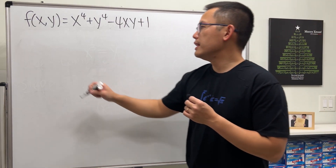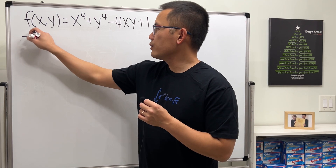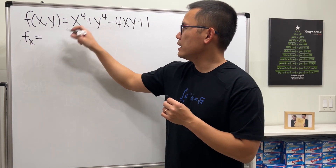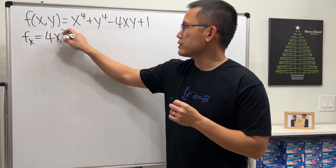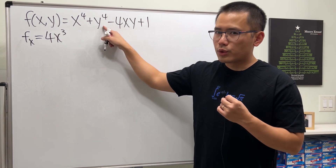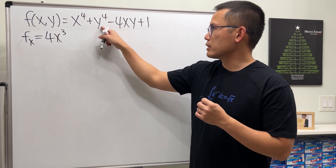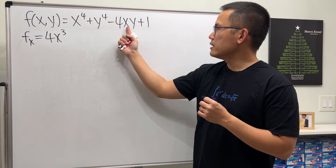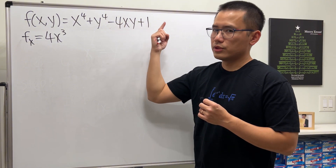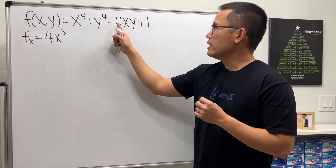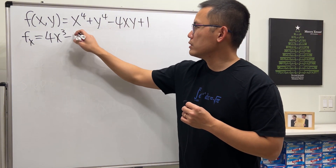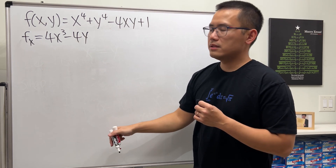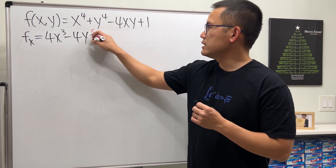Now let's look at the example. First, let's do the partial derivative with respect to x. We get 4x³ for the x terms — y is treated as a constant so that gives zero. Then the derivative of x is just one, so we maintain the constant multiple giving minus 4y.